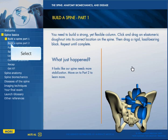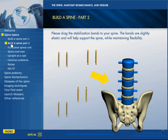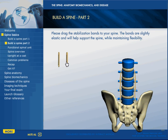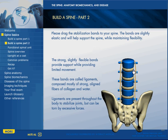And when we finish, it collapses — what just happened? So we go to 'Build the Spine Part Two,' and we see that we have to drag elastic stabilization bands to the spine to give it some rigidity. Now the learner has a basic understanding that the spine is composed of discs and vertebrae, and they need to be stabilized in some fashion.